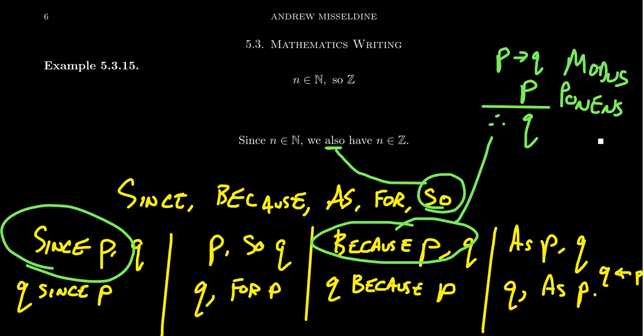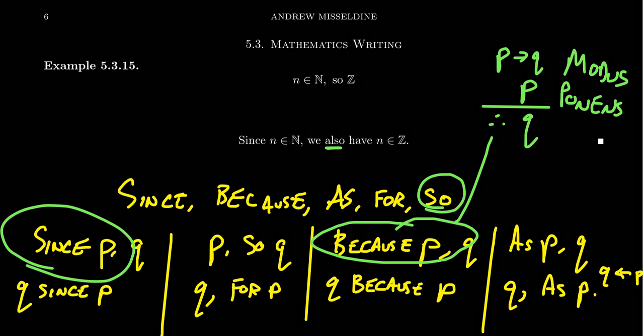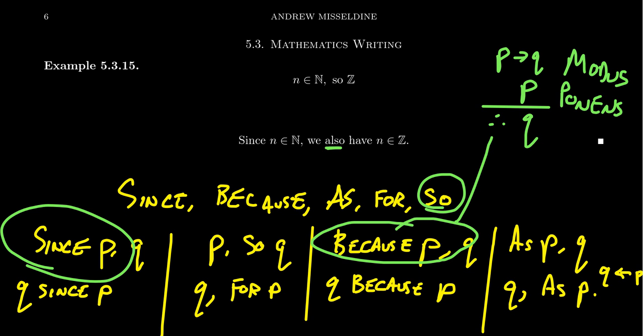You're saying that this thing has the same property as the previous thing because every natural number is an integer. So be very cautious with your - maybe not cautious, you shouldn't be scared of them - but be careful, be intentional with your words: since, because, as, for, so, also, etc.